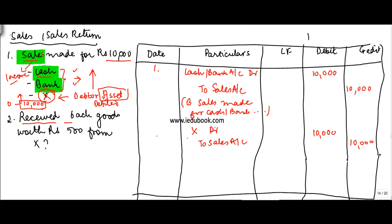The next one is received back goods worth Rs. 500 from X. So out of the sales that I had done here, X came back and said I don't require these goods of 500. So X is an asset. Once he returns the goods, what happens is I need to get less money from him, so his value or his number is being reduced. So an asset is reduced. So what do you do when the asset is reduced? You credit the asset by 500.